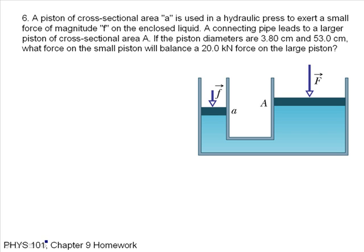A piston of cross-sectional area A is used in a hydraulic press to exert a small force of magnitude F on the enclosed liquid, connecting pipe leads to a larger piston of cross-sectional capital A. And it gives the piston's diameters what force will balance the 20 kilonewton force on the large piston. So I know that the pressure here, I'll call it P1, is equal to the pressure here. That's Pascal's principle. P1 is equal to P2. P1 is little f over little a, and that's equal to big F over big A. So I just want to solve for little f.